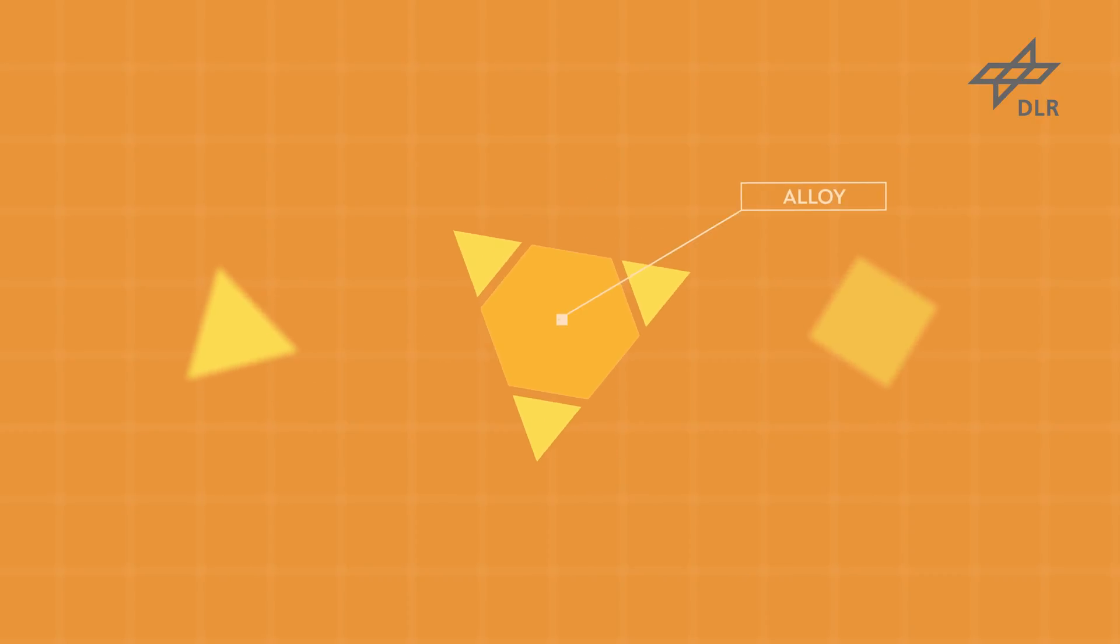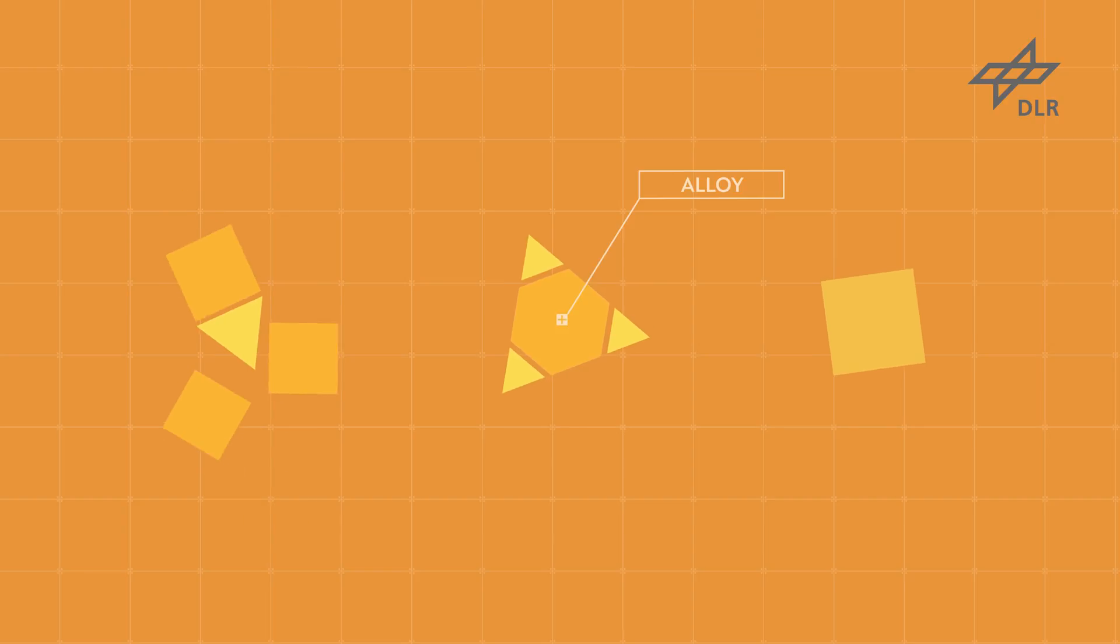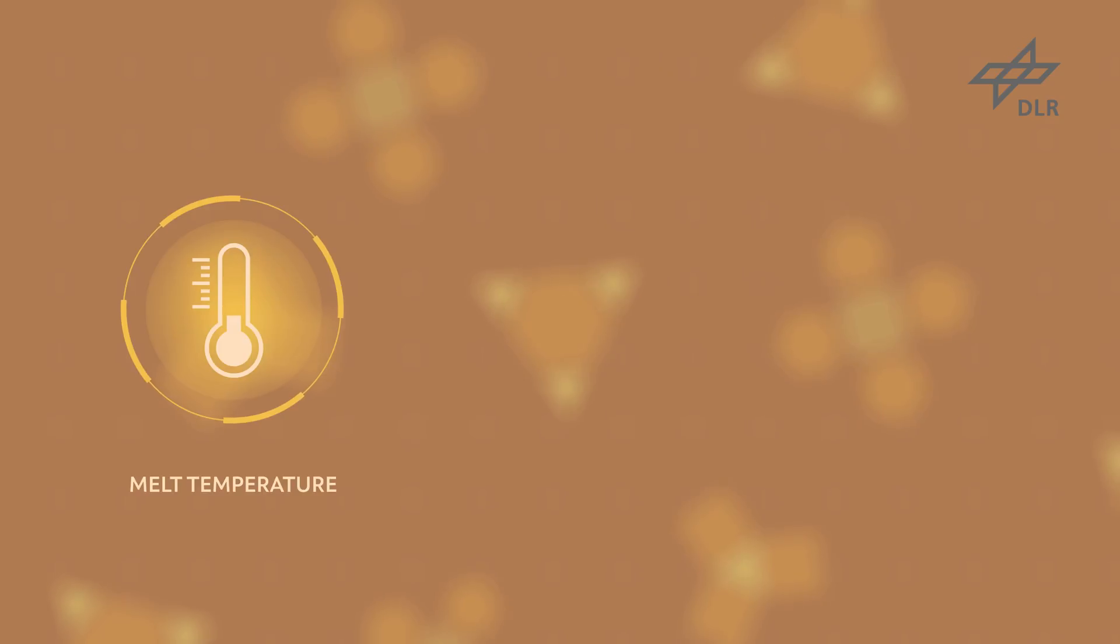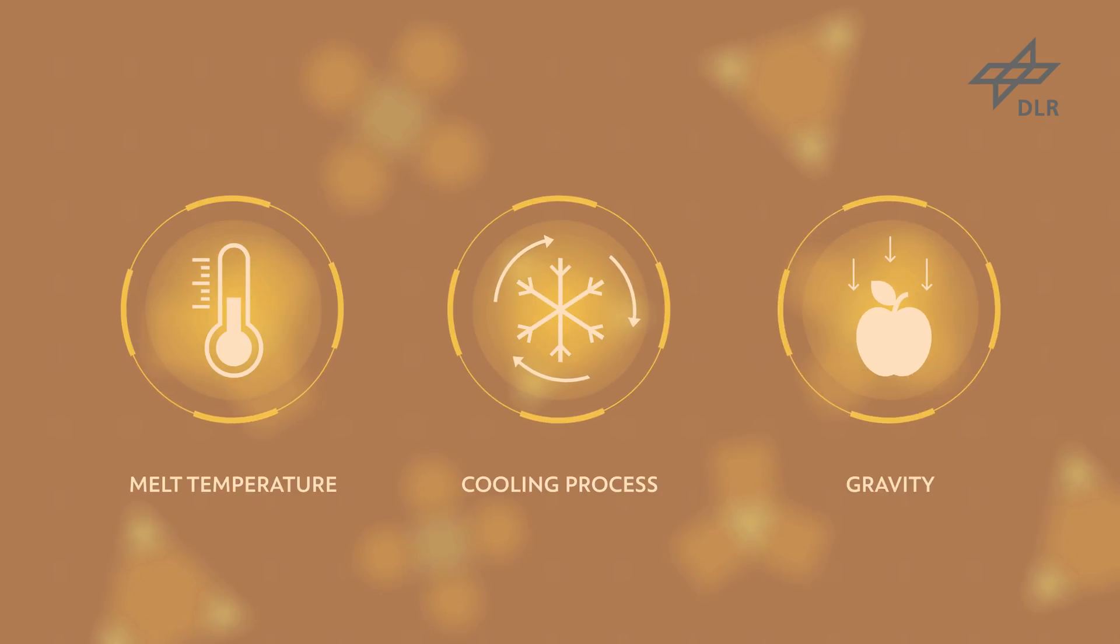But like when baking a cake, the result of combining two materials depends on more than just adding the correct ingredients. The melt temperature, the cooling process, and gravity influence the properties of the resulting alloy.